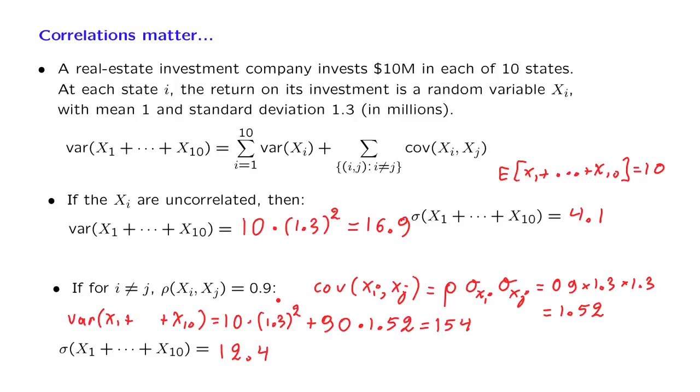To some extent, this is similar to what happened during the great financial crisis. That is, many investment companies thought that they were secure by diversifying and by investing in different housing markets in different states. But then when the economy moved as a whole, it turned out that there were high correlations between the different states, and so the unthinkable, that is, large losses, actually did occur.